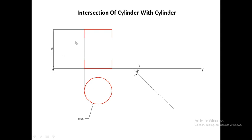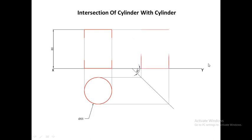You can see that some portion of this line is dark whereas some portion is light — the reason for this will be explained later. For now, draw the front view as a rectangle of height 80 mm. Then draw the side view of the vertical cylinder, also a rectangle of height 80 mm, by projecting the two extreme points onto the 45-degree line and then projecting into the side view. This completes step one: the top view, front view, and side view of the vertical cylinder.